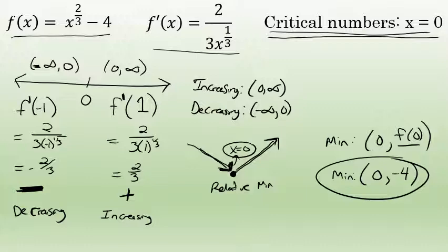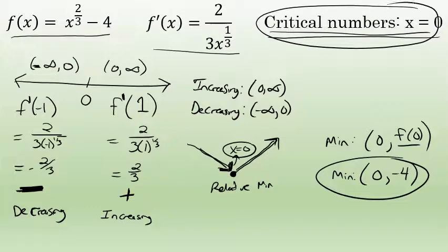So for the function f(x) = x^(2/3) - 4, there is one critical number: x = 0. This function is increasing on the interval from zero to infinity, it's decreasing on the open interval from negative infinity to zero, and there is one extreme value — a minimum at the point (0, -4).